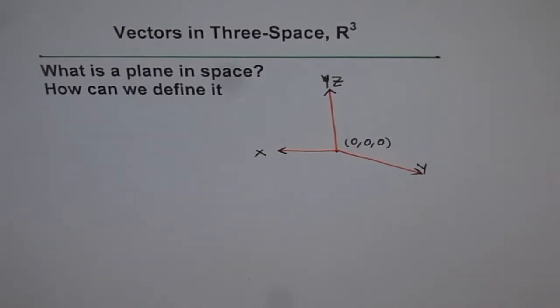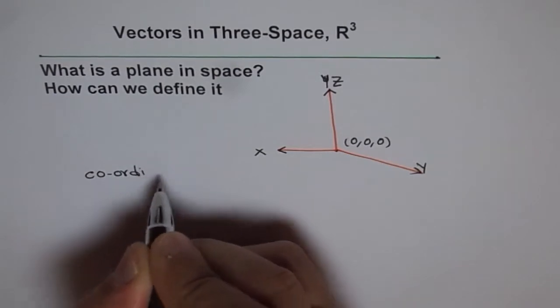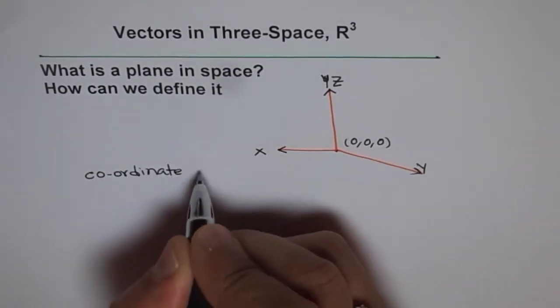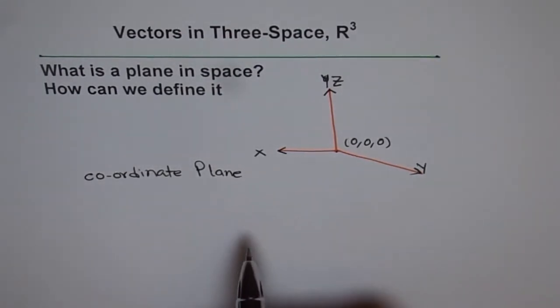Now the simple definition for the plane is that a plane in space that contains two of the coordinate axes is known as the coordinate plane. So we'll just give them a simple name, coordinate plane, and here we have three coordinate planes.